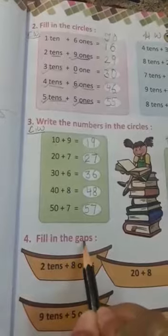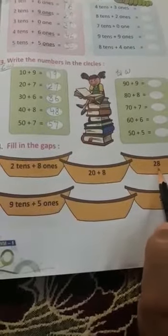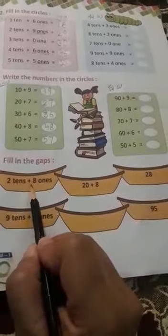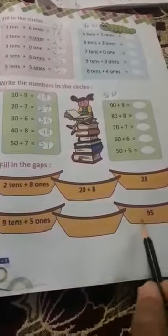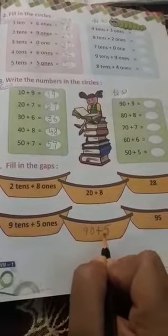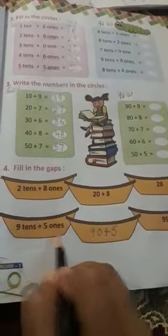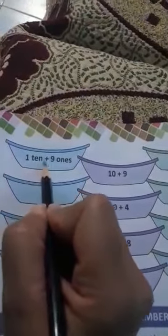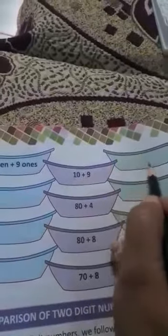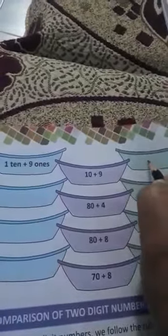Question 4: Fill in the gaps. Gaps को भरो। बेटा, पहला part इसमें किया हुआ है। यह 28 है। 28 की expanded form को हम दो तरह से लिख सकते हैं - 20 plus 8, जो 28 बनता है। फिर ऐसे भी लिख सकते हैं: 2 tens plus 8 ones, जो 28 बनता है। इसी तरह next question में 95 है। 95 को ऐसे लिख सकते हैं: 90 plus 5. और ऐसे भी: 9 tens plus 5 ones. अगले page में: 1 ten plus 9 ones दिया है। 10 plus 9 क्या बन जाएगा? 19.